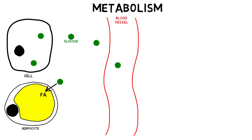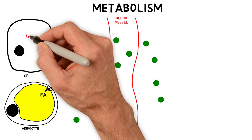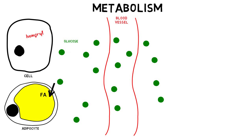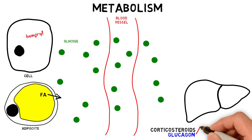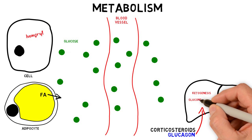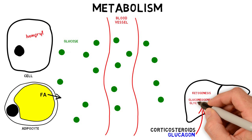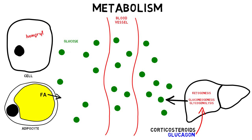With insulin absent, glucose struggles to enter the cell and begins accumulating in the extracellular compartment. Intracellular glucose falls and the body becomes convinced it is starving. Fatty acids are mobilized from adipose tissue and a stress response begins with release of corticosteroids and glucagon. The glucagon plays a primary role in shifting metabolism towards ketogenesis, as well as gluconeogenesis and glycogenolysis, which serve to further worsen the developing hyperglycemia.